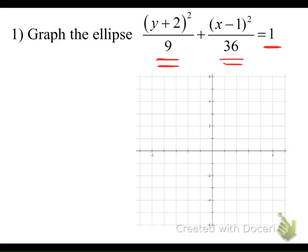The first thing we'll need to do is find the center of our ellipse. Be really careful — h is inside the parentheses with the x, so the x-coordinate of our center is positive 1. The k is the value inside the parentheses with the y, and that's going to be negative 2. You'll use the opposite signs of h and k. We'll plot that center first at (1, -2).